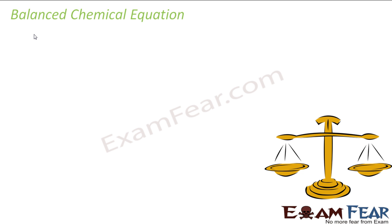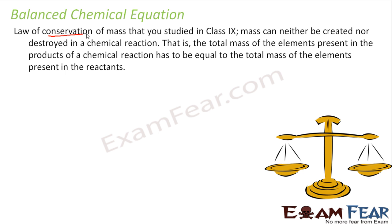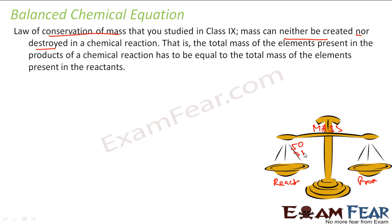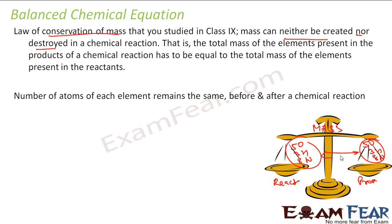The basic principle of a chemical equation is that it should be balanced, because the law of conservation of mass — studied in class 9 — says that mass can neither be created nor destroyed in any chemical reaction. You can't create or destroy any element in any chemical equation. That is, the number of atoms of each element must remain the same before and after a chemical reaction.